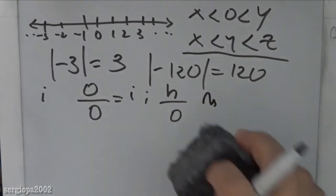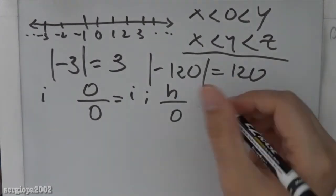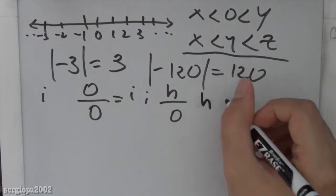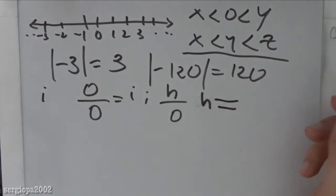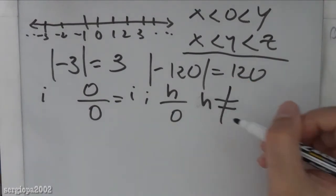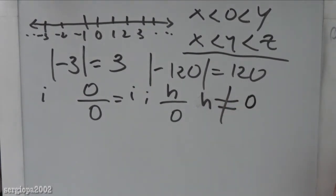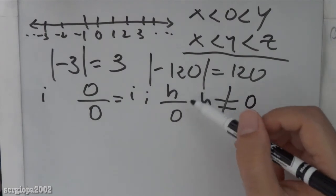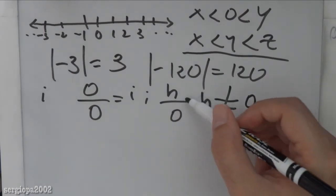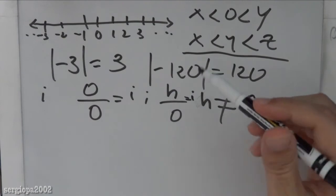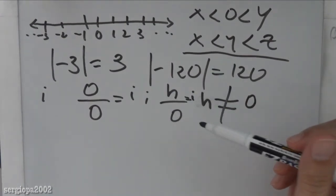The other case is if you have n divided by 0, so n being any number different than 0. This is the symbol for different—when you want to do different, just cross it like this. This is n different than 0. So in this case, this also is equal to an indeterminate. We don't know how much is that, but we just call it indeterminate or unreal.